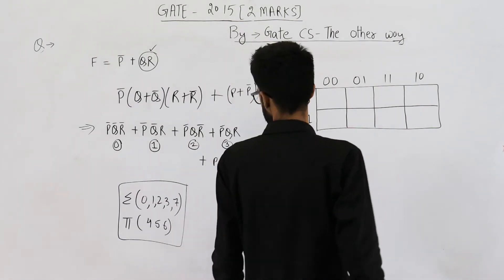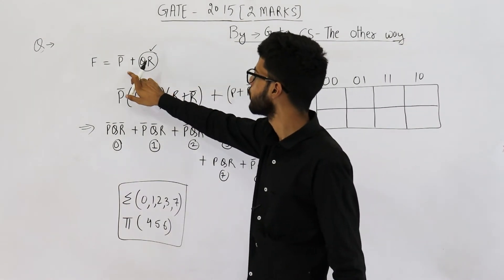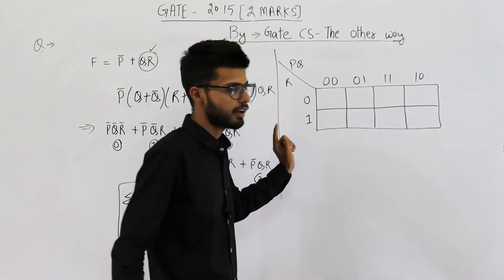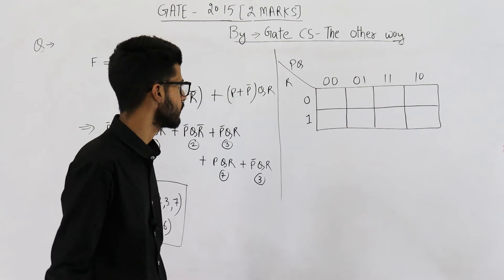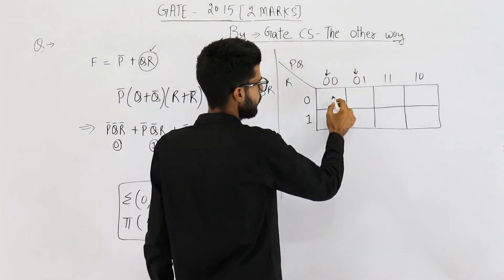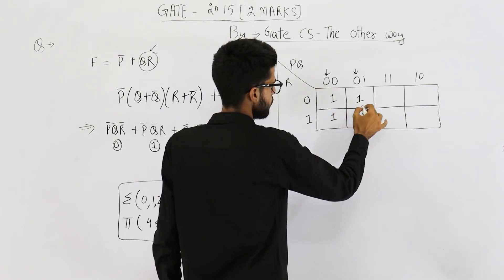Now let's solve it in another way, that means using the K-map. The function is P bar plus QR. So for P bar, you fill 1 at all the cells where P is having a value of 0. So this is variable P, it's having a value 0 in all these 4 cells. So fill a 1 here.